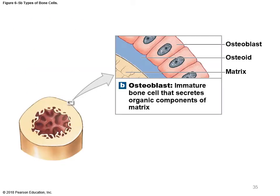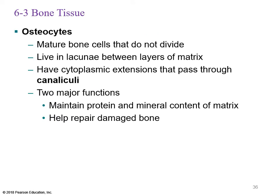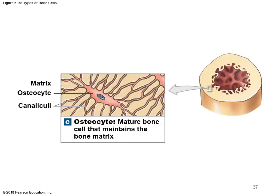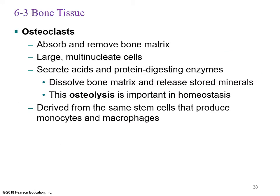An osteoblast is an immature cell secreting an organic matrix called the osteoid, which then becomes crystallized. Osteocytes are mature bone cells that do not divide; they live within lacunae between layers of matrix and have cytoplasmic extensions passing through canaliculi like pseudopods. The two major functions of an osteocyte are to maintain the protein and mineral content of the matrix and to help repair bone. Osteoclasts absorb and remove bone matrix — large multinucleated cells secreting acids and protein-digesting enzymes that dissolve bone matrix and release stored minerals.